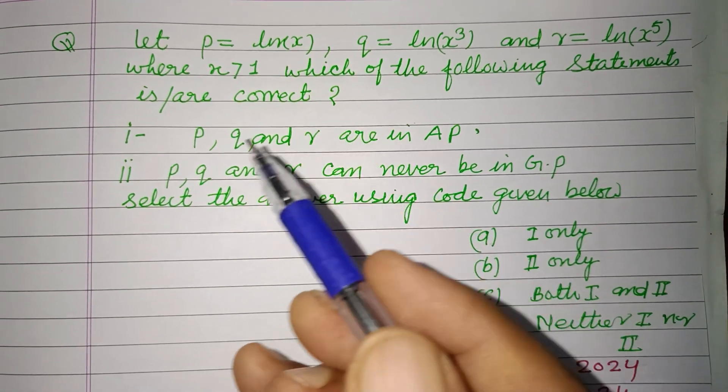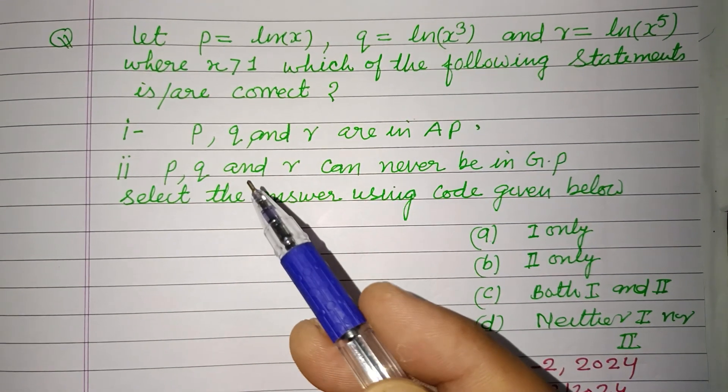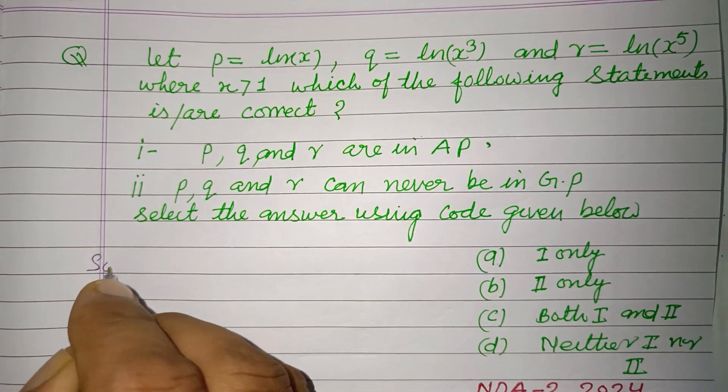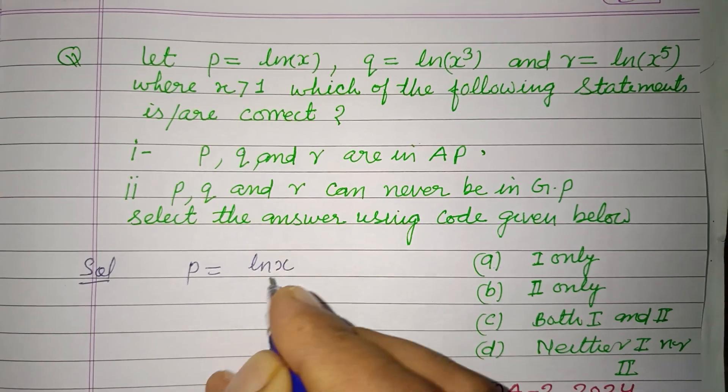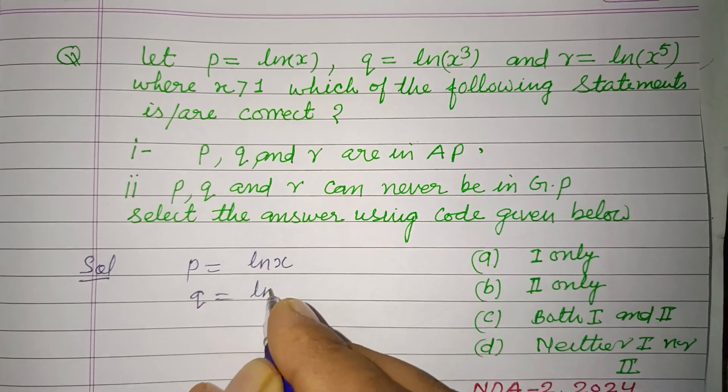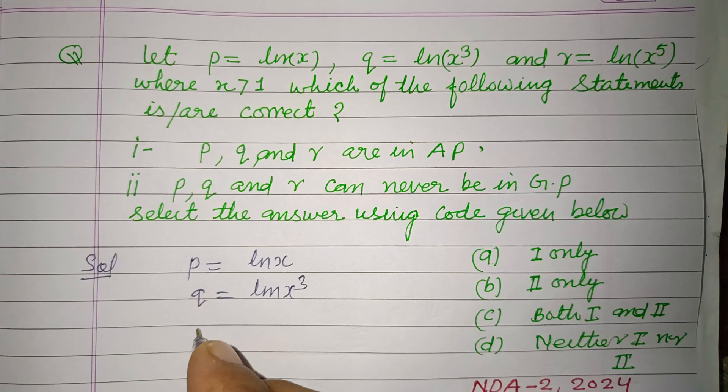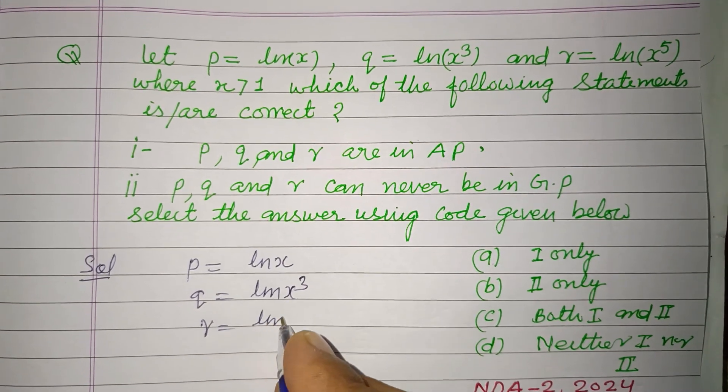Which of the following statements is/are correct? p, q, r in AP. So here p is given to us as ln(x), q is given to us as ln(x²), and r is given to us as ln(x⁵).